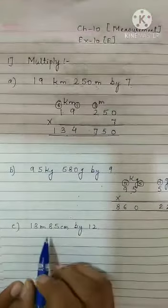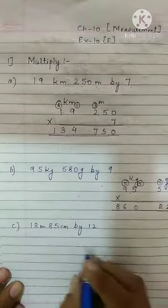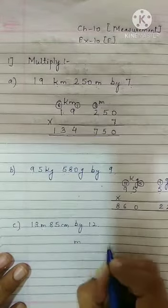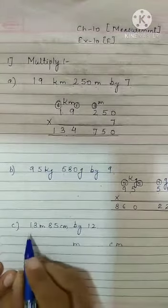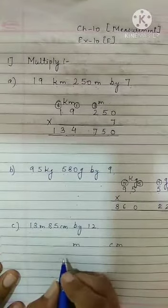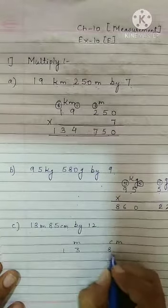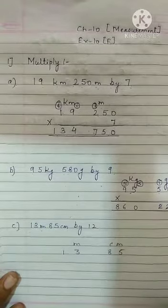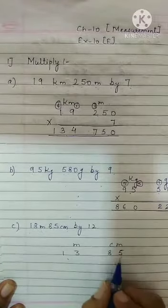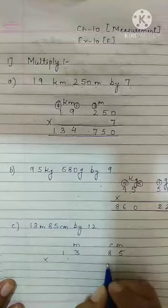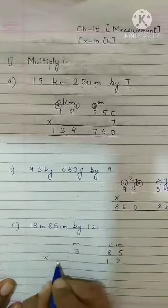Now come to the C part, meter and centimeter. So I am writing the unit first: meter, centimeter. So 13 meters. So I am writing 13 meters, 85 centimeters, 85 centimeters. We have to multiply them by 12.